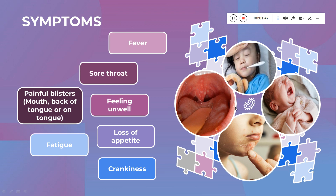The symptoms include fever, sore throat due to blisters in the mouth, and the child starts feeling unwell. It is not able to eat properly because of the sores in the mouth, hands, and legs, leading to loss of appetite. Because of the pain, the child will also experience crankiness, fatigue, and painful blisters — which are the main characteristic features of this disease.